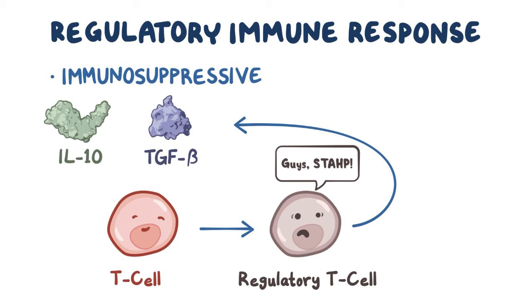The fourth type of cytokine response is a little different from the other immune responses, because its main goal is to replenish the immune cells. Growth factors like GM-CSF, MCSF, and interleukin-7 are produced by bone marrow stromal cells, where they get bone marrow progenitor cells to differentiate. GM-CSF and MCSF promote the differentiation of monocytes and granulocytes, while interleukin-7 promotes the differentiation of progenitor cells into lymphocytes like B cells, T cells, and natural killer cells.